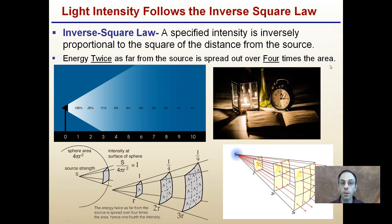Now light intensity follows this particular inverse square law. The inverse square law is a specified intensity is inversely proportional to the square of the distance from the source. What does this mean? In a little easier terms here, energy twice as far from the source is spread out over four times the area. So we'll notice here with our light, as we get further away, it's like an exponential decrease in the intensity of the light.